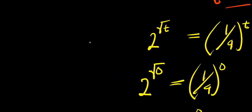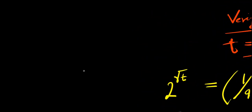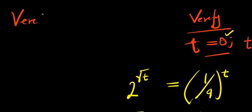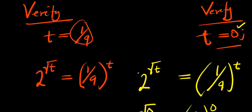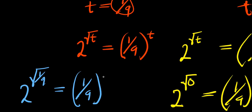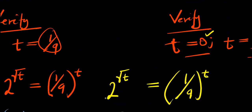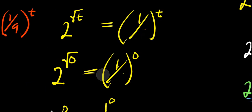Now let's consider when t equals 1 over 9, the other solution. Let's check that particular solution. We have t equals 1 over 9: the original equation uses 1 over 8, not 1 over 9, raised to the power t. So the right-hand side is 1 over 8 raised to the power of 1 over 9. The answers for t=0 verification are still accurate, but for this check we use 1 over 8, not 1 over 9.